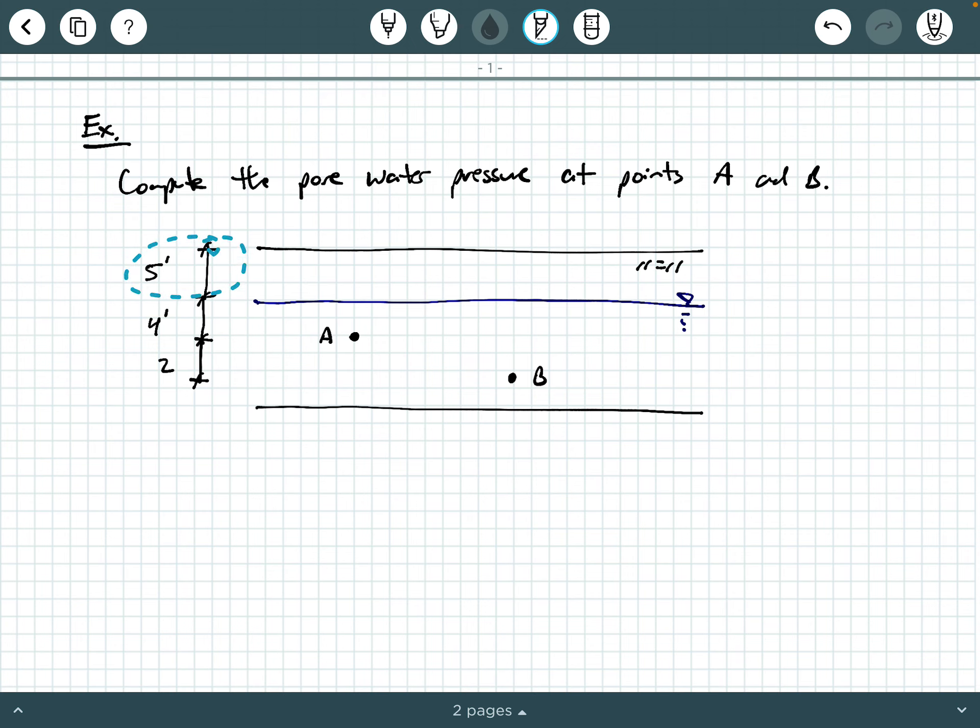Remember, pore water pressure is defined as the height of water above the point of interest times the unit weight of water. So we have two points of interest here. We have a point A and then we have a deeper point B.